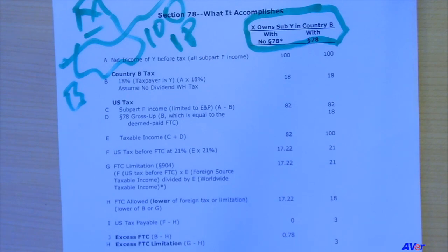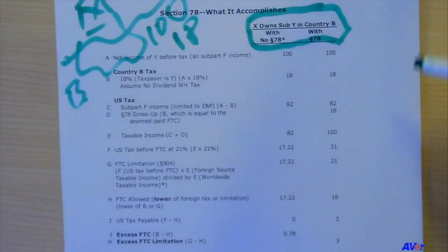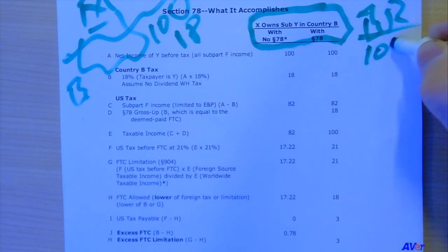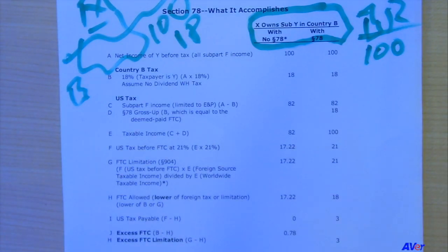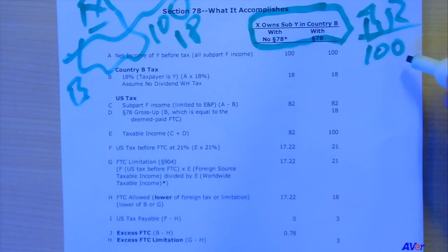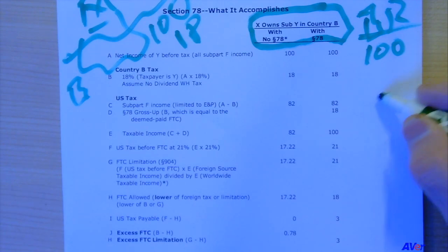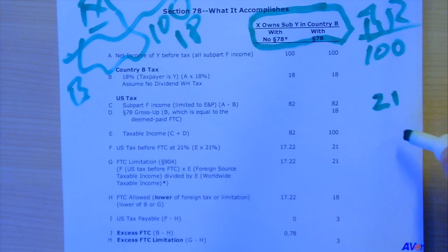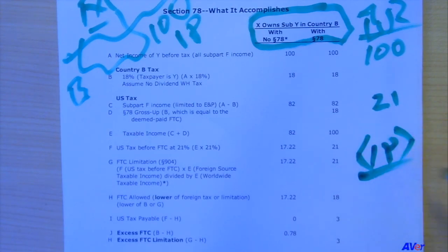So country B has imposed 18 of tax. Now when this 100 is reported in the branch alternative in the U.S. tax return — remember, X as a U.S. person is taxable on 100% of its net income no matter where earned — so we have 100, we have U.S. tax of 21 because the tax rate now at the corporate level is 21. We then go through the foreign tax credit routine and we ultimately get a tax credit of 18, and we end up at the bottom with 3 of additional U.S. tax. This is the branch situation.